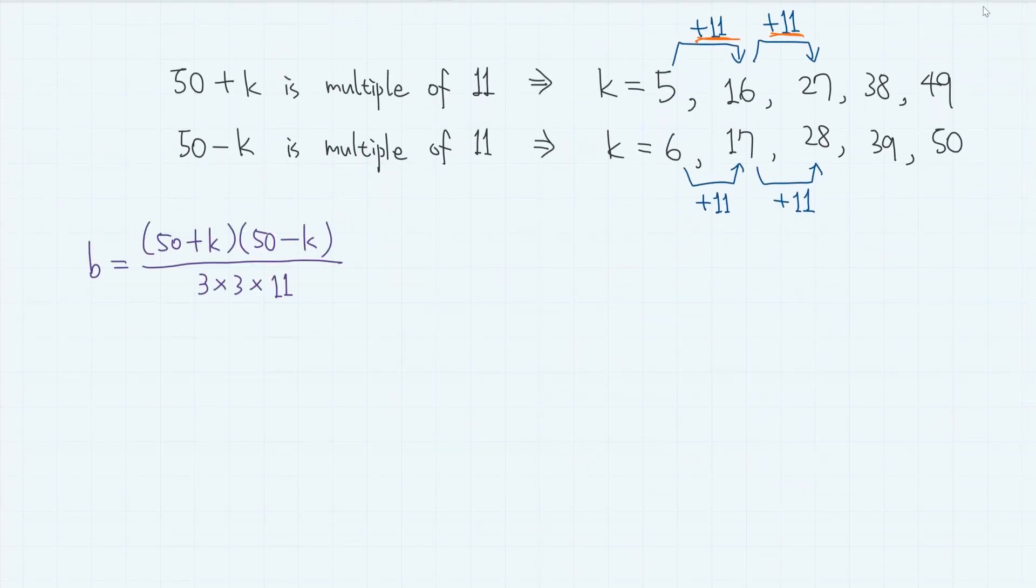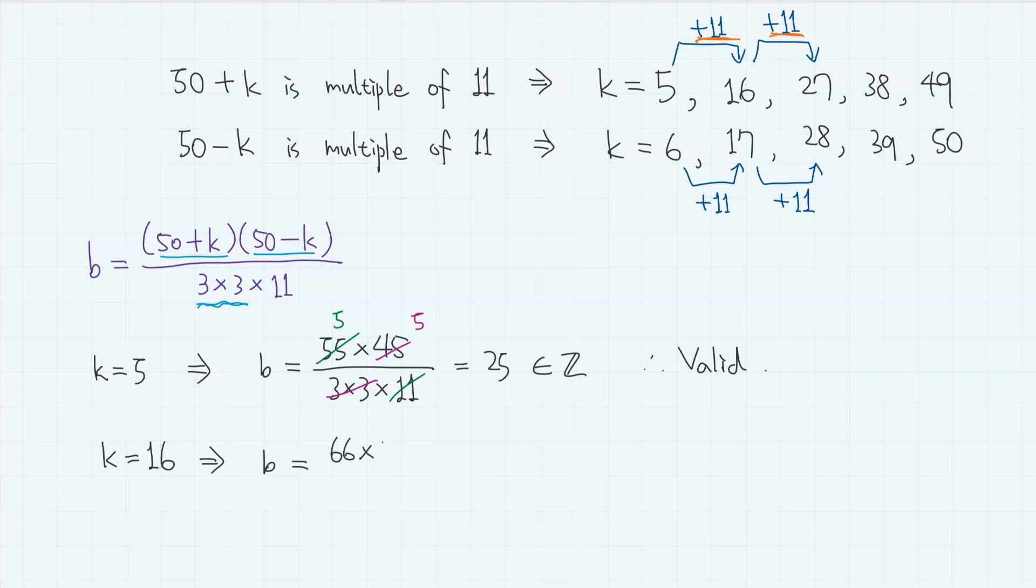From here, we can rule out invalid cases that do not make (50 plus k) times (50 minus k) a multiple of 9. For example, if k equals 5, then b equals 55 times 45 divided by 3 times 3 times 11. And 55 is divisible by 11, and 45 is divisible by 9. So we have integer value for b. Hence, k equals 5 is a valid case. But if we try the next value, which is k equals 16, then we have b equals 66 times 34 divided by 3 times 3 times 11. And here, 11 divides 66. But 6 times 34 is not a multiple of 9. So we don't have an integer value. Hence, k equals 16 is an invalid case. If we do this, we can rule out these values. Hence, the only valid cases are k equals 5, 49, and 50.